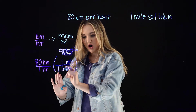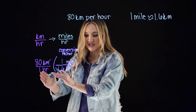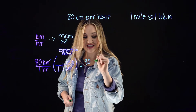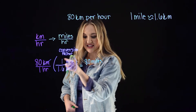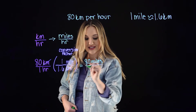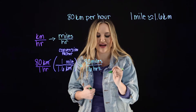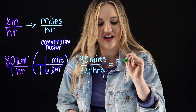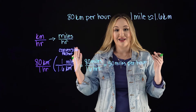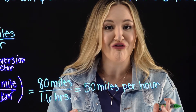Now we can multiply across. Remember, the kilometers in the numerator cancel out with the kilometers in the denominator. So as we're multiplying across, we have 80 times 1, which is just 80, and we have units of miles — 80 miles. In the denominator, we have 1 hour times 1.6, which is 1.6 hours. Let's go ahead and type it into our calculator to get 50 miles per hour. So now you know that a posted speed limit of 80 kilometers per hour is equivalent to 50 miles per hour.